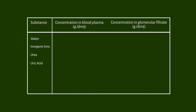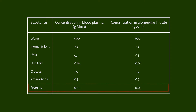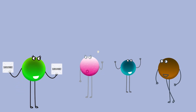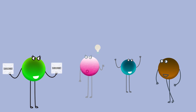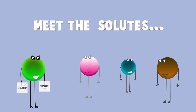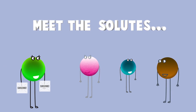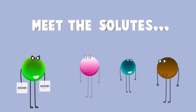As you can see here, the filtrate in the Bowman's capsule is identical to the blood plasma in the glomerulus, except for the protein concentration. It is therefore expected that the glomerular filtrate will contain many good substances that the body should keep, as well as some not-so-good ones that need to be gotten rid of.